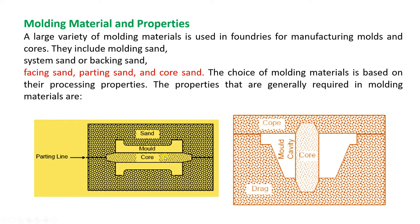The types of sand are: facing sand, parting sand, and core sand. Core sand is used to make the core. If you have any hollow section, we need to make that hollow section using core sand only. We place the core sand in exactly the center portion so that portion will not be filled with the mold material. After pouring, you will get a hollow section by breaking this core sand.